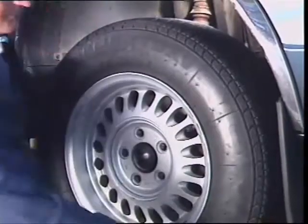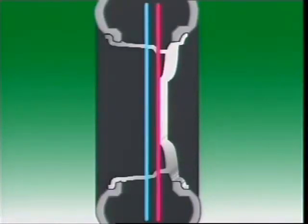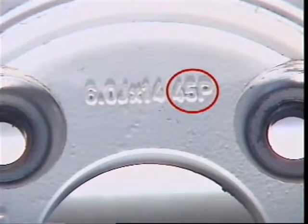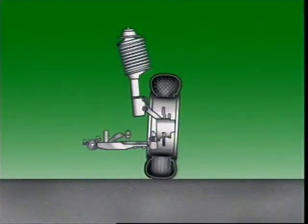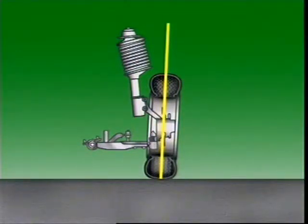The wheel centre must accurately locate the wheel rim centrally on the axle. It must also provide the required distance from the centre line of the wheel to the face of the mounting flange — this is called offset. On this wheel the offset is marked at 45 millimetres. Offset is important because it brings the tyre centre line into close alignment with the larger inner hub bearing and reduces load on the stub axle.